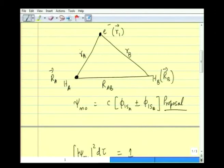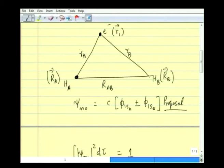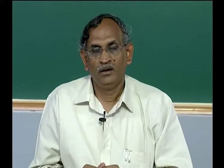So φ₁ₛA depends on R_A, the vector difference between the electron position r₁ and r_A, and φ₁ₛB depends on R_B. Since the 2 orbitals are centered on 2 different nuclei, there is no reason why the integral combining φ₁ₛA and φ₁ₛB inside the integral should vanish. In doing this normalization we come up with an additional quantity: C²[∫φ₁ₛA·φ₁ₛA dτ + ∫φ₁ₛB·φ₁ₛB dτ + 2∫φ₁ₛA·φ₁ₛB dτ] = 1.